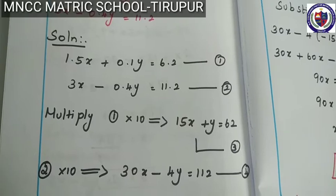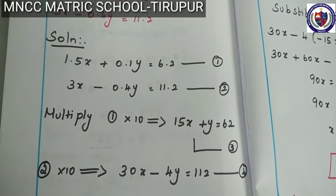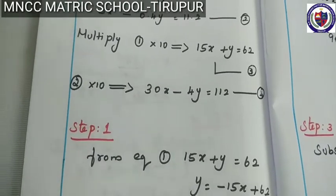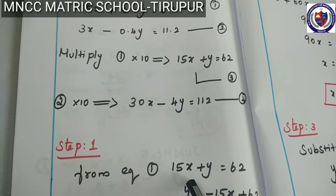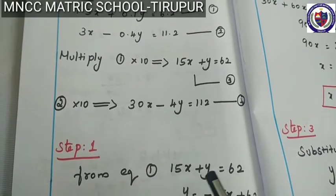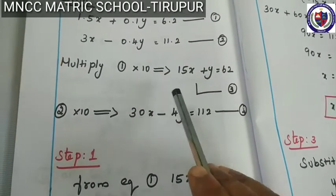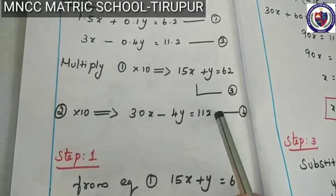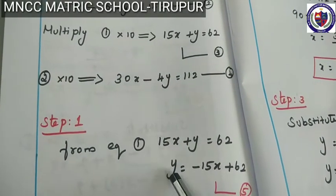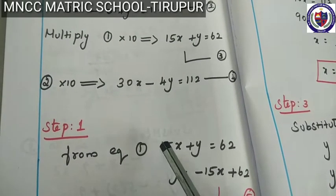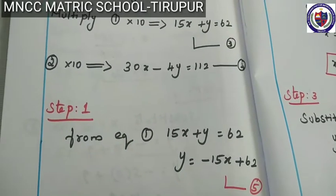Step number 1: from any of the given two equations, find the value of one variable in terms of the other. So from equation 3: 15x plus y is equal to 62. Therefore y is equal to minus 15x plus 62. This is equation number 5.